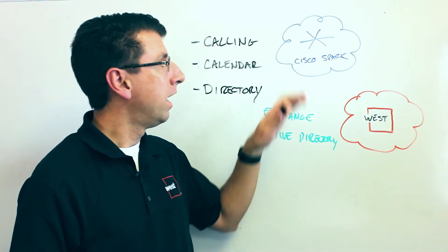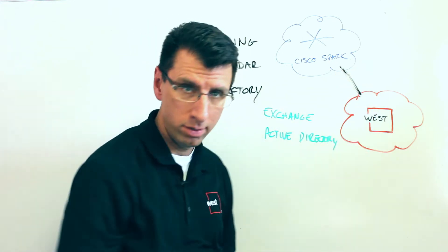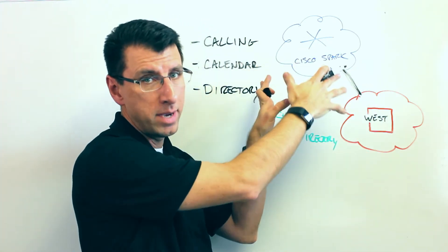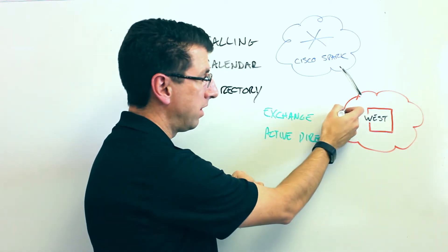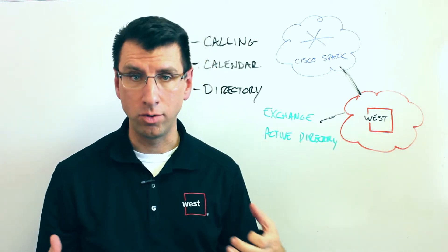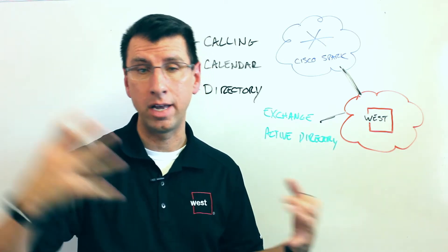But basically what happens is you get the Cisco Spark cloud joined up with the West cloud. So you've got the Spark services for message and meeting and you've got the West cloud for calling. What that enables is the West cloud to then communicate with your Exchange or Active Directory environment regardless of whether it's in the Office 365 cloud or on-prem.